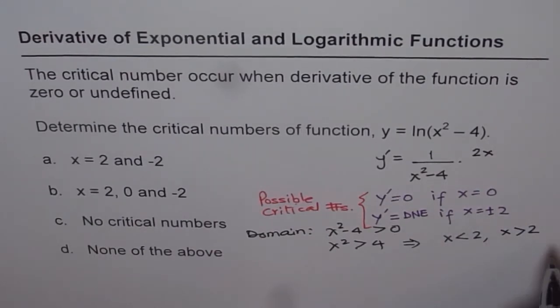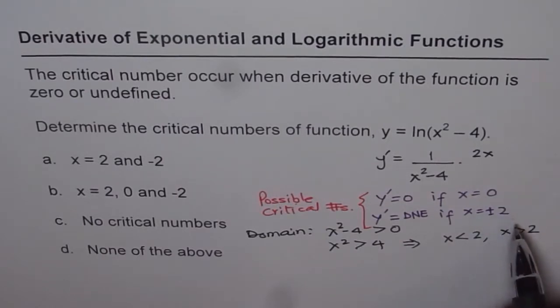As you can see, the critical numbers which we calculated—plus or minus 2 and 0—they are not in the domain.